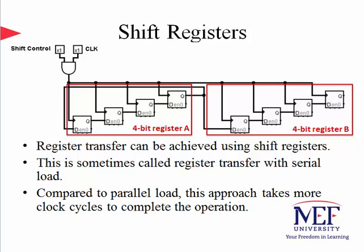We still have two registers, register A and register B, both are shift registers, and we transfer information from register A to register B. Register A has a feedback because continuous clock signals will lead the information to shift in the register, and in order to keep the same information in the same register after the transfer, we need circular shift in register A. The feedback is doing exactly that, while the content is allowed to transfer to register B at exactly 4 clock cycles.